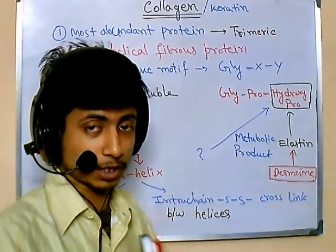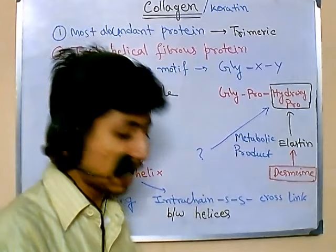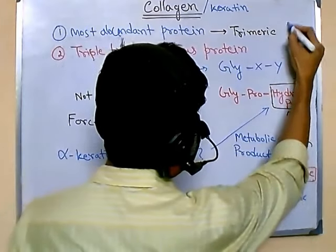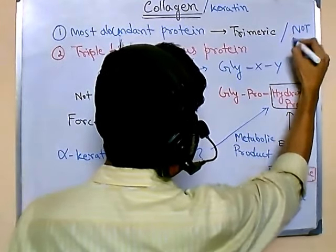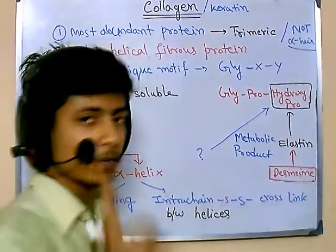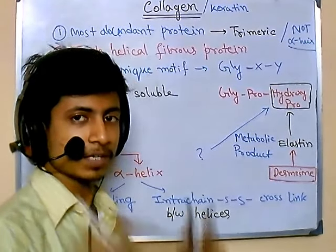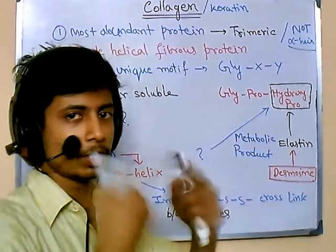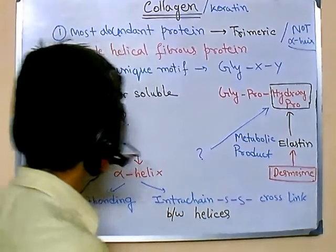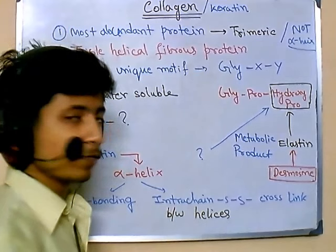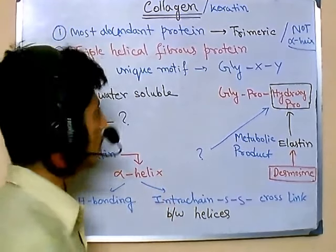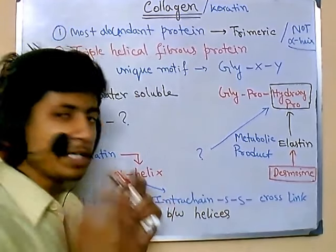Be very careful: this helix is NOT an alpha helix. The three chains wound around each other do produce a helix, but it is not an alpha helix. Collagen is a triple helical fibrous protein — that distinction is very important.